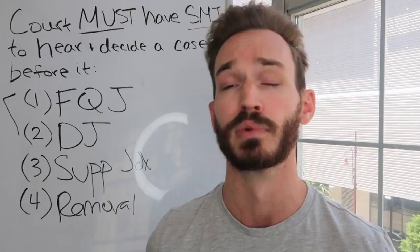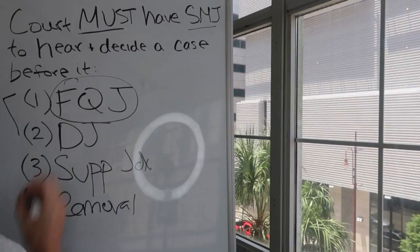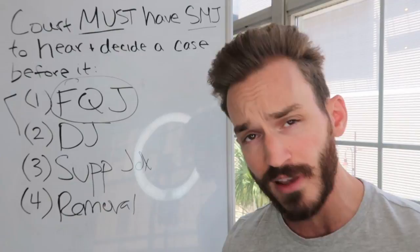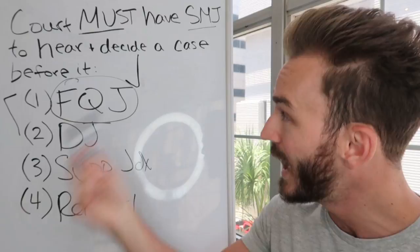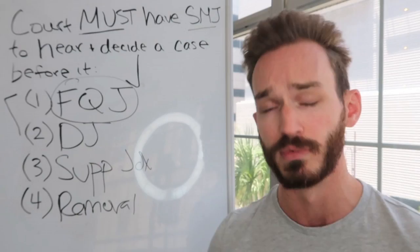So what is federal question jurisdiction? That is the first way that a court can obtain subject matter jurisdiction. It's pretty easy: if the plaintiff alleges a claim that arises under federal law, the federal court has federal question jurisdiction and can hear and decide the case, so long as the other subject matter jurisdiction requirements are met.